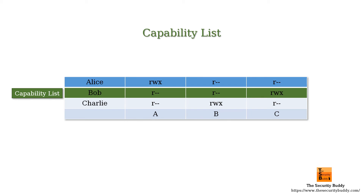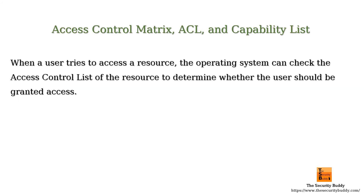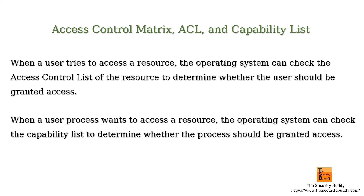So when a user tries to access a resource, the operating system can check the access control list of the resource to determine whether the user should be granted access. Similarly, when a user process wants to access a resource, the operating system can check the capability list to determine whether the process should be granted access.